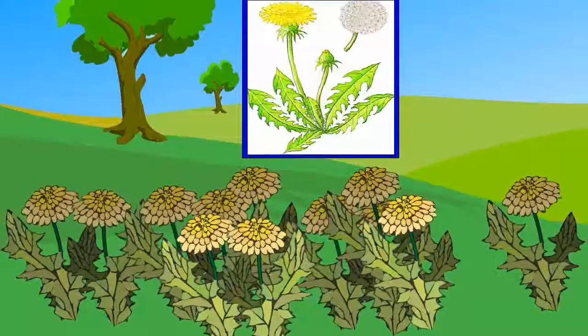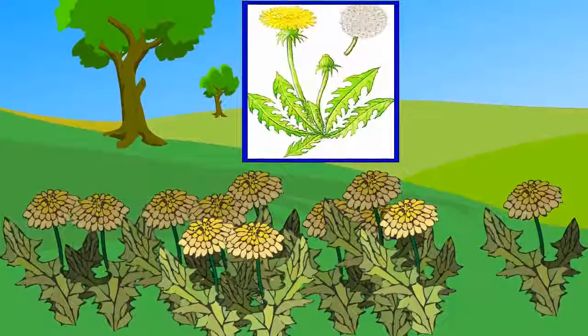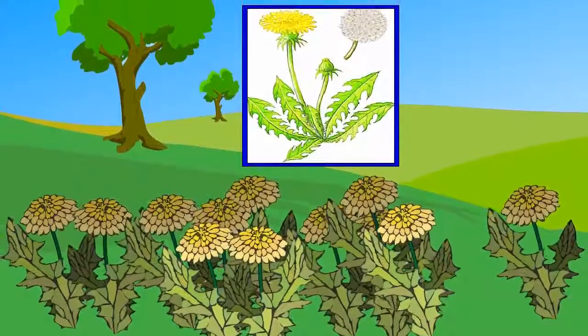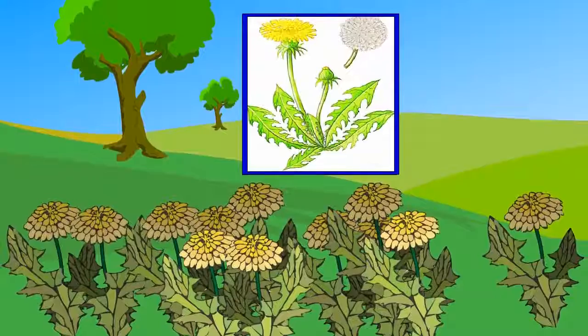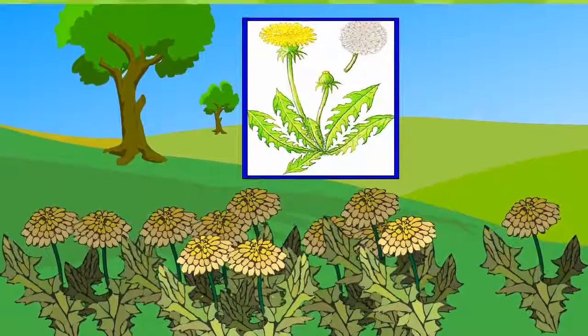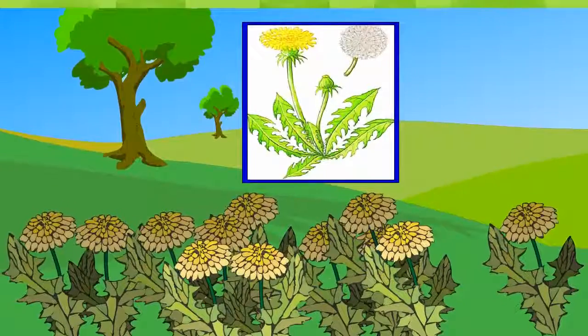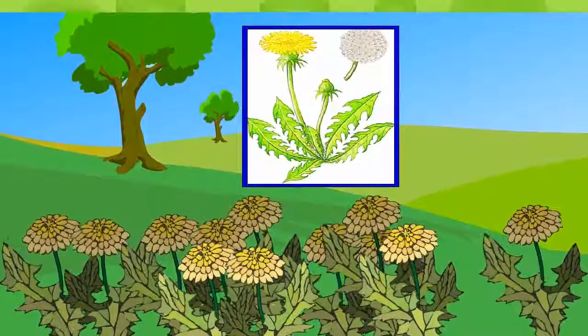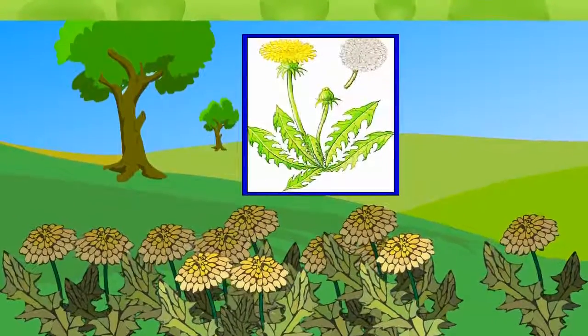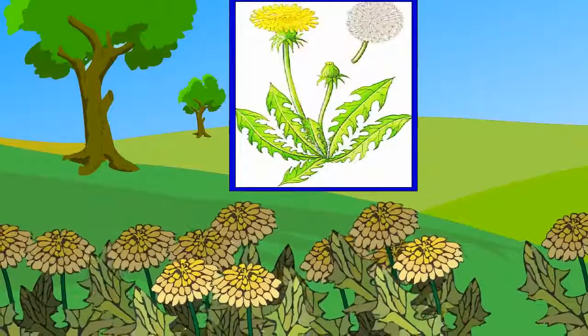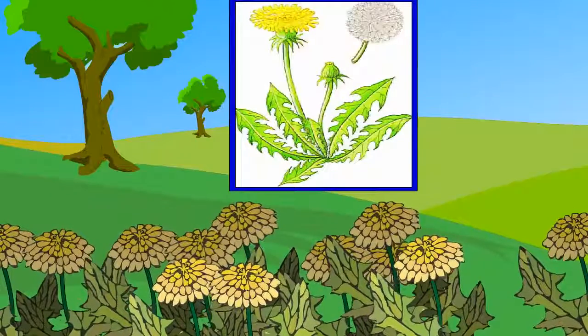Dandelion is a weed that spreads very rapidly. It has yellow flowers with white, rounded seeds with a tiny parachute that helps it to spread by wind.